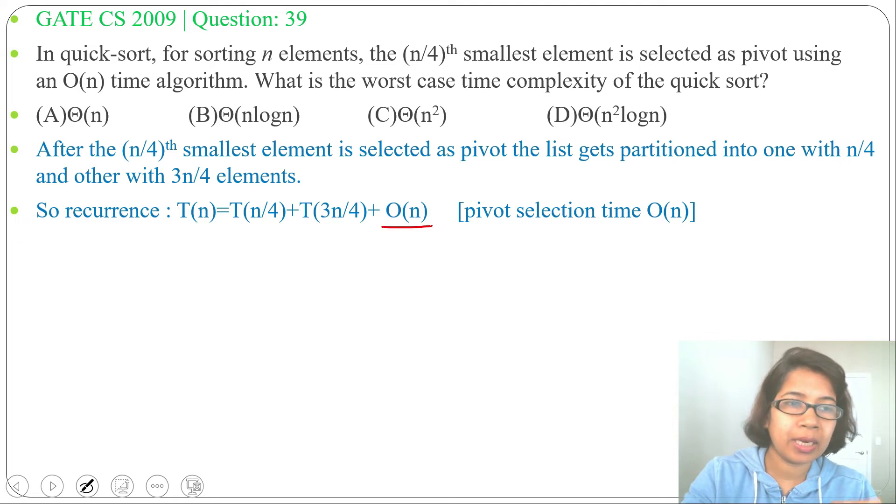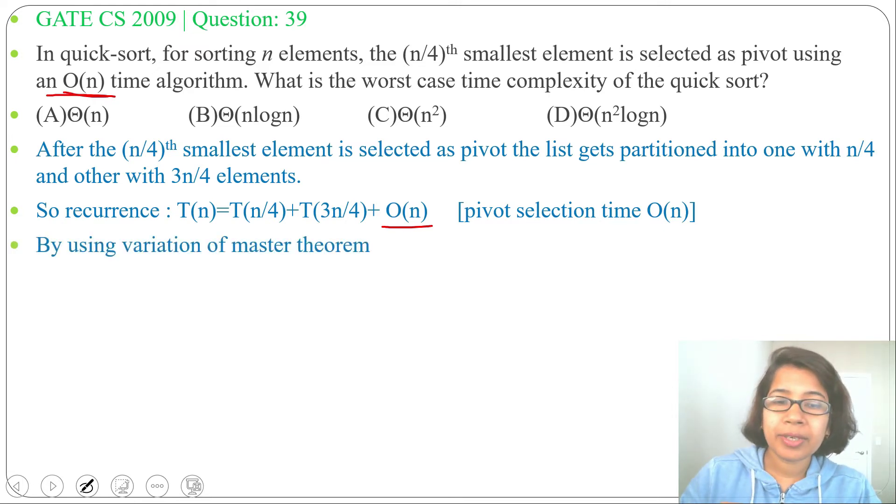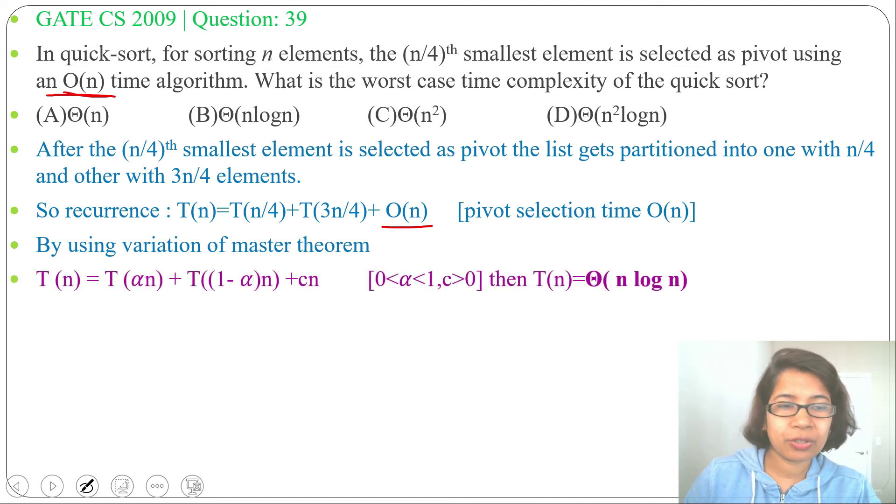as here it is given O(n) for selecting the pivot. Now by using a variation of the master theorem, which I already discussed during lecture: if a recurrence is in this format T(n) = T(αn) + T((1-α)n) + cn,